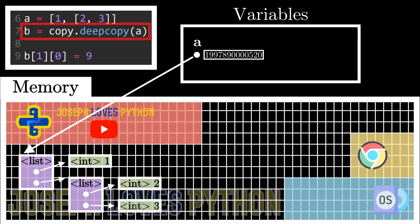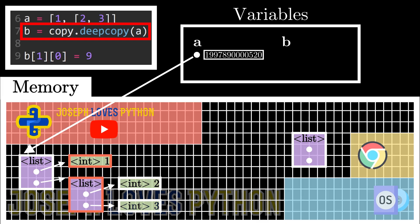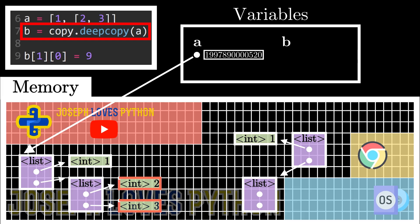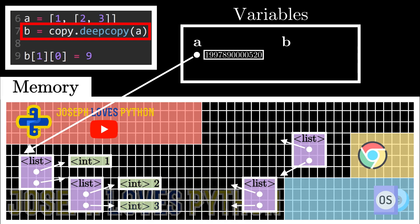What this does is the following: first, Python creates a copy of the first-level list object. After which, all the second-level objects — the objects the first-level object points to — are also copied. And finally, the third-level objects are copied. This continues regardless of how deep your structure is. One important detail is that Python will skip copying immutable objects even when using DeepCopy — to save memory space and because it's unnecessary, since modifications to immutable objects won't affect other variables.